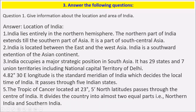India occupies a major strategic position in South Asia. It has 28 states and 8 union territories, including the National Capital Territory of Delhi. 82°30' East longitude is the standard meridian of India, which decides the local time of India, and it passes through five Indian states. The Tropic of Cancer, located at 23.5° North latitude, passes through the center of India.